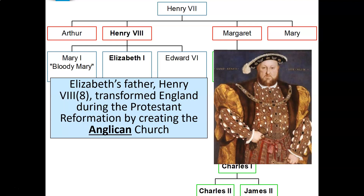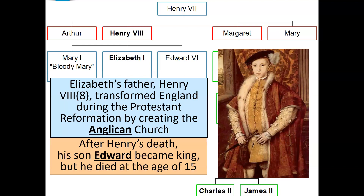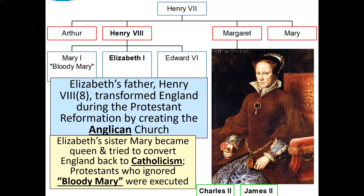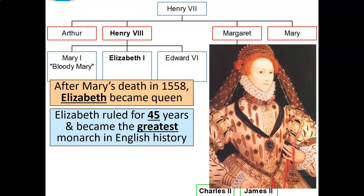Elizabeth's father, Henry the Eighth, transformed England during the Protestant Reformation by creating the Anglican Church. After Henry's death, his son Edward became king but died at the age of 15. Elizabeth's sister Mary then became queen and tried to convert England back to Catholicism. Protestants who ignored her were executed, which is why she's also known as Bloody Mary. After Mary's death in 1558, Elizabeth became queen of England.